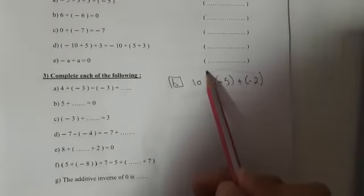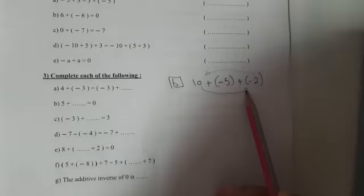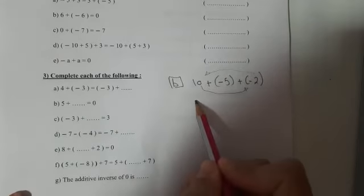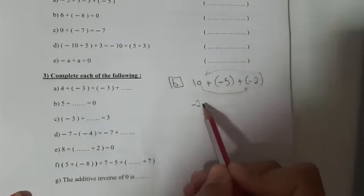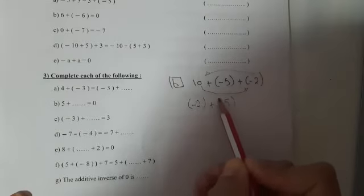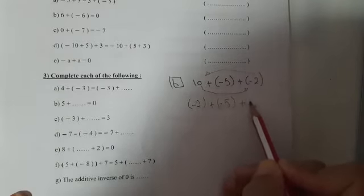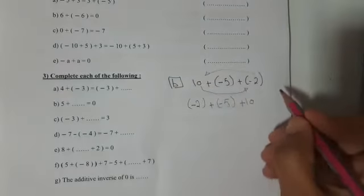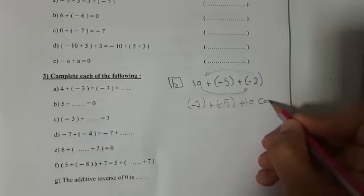So let's switch the negative 2 and the 10, for example. Let's switch them. So I will make negative 2 plus negative 5 plus 10. I changed places. So this is the commutative property.